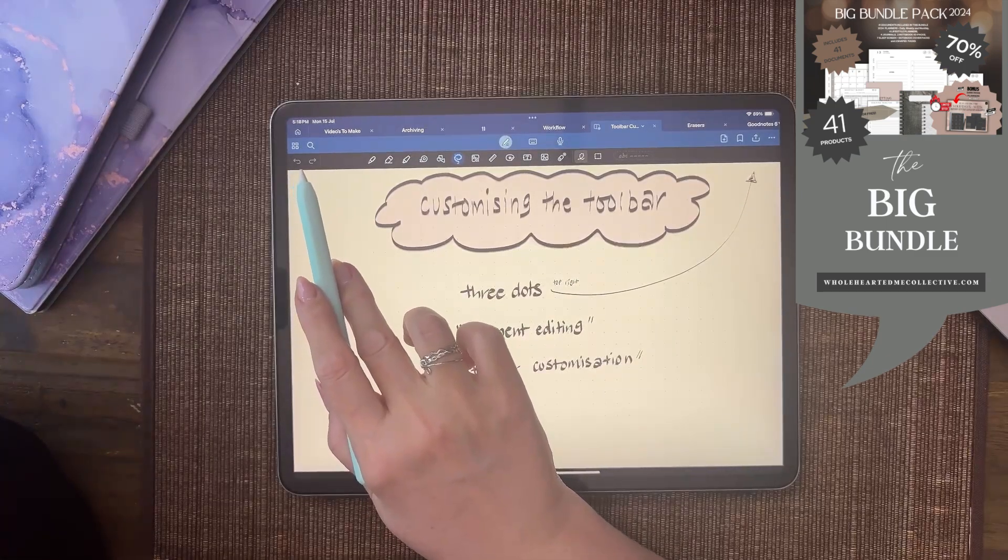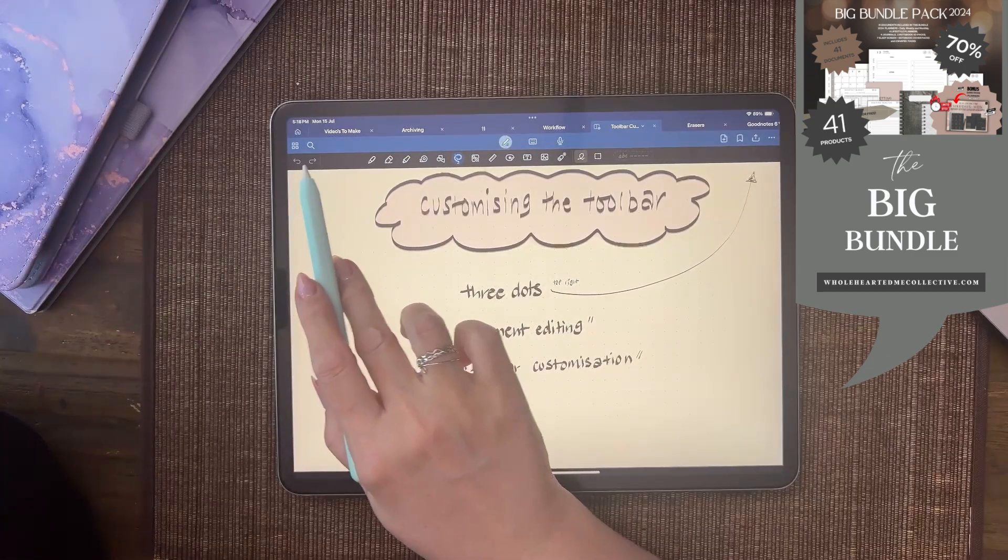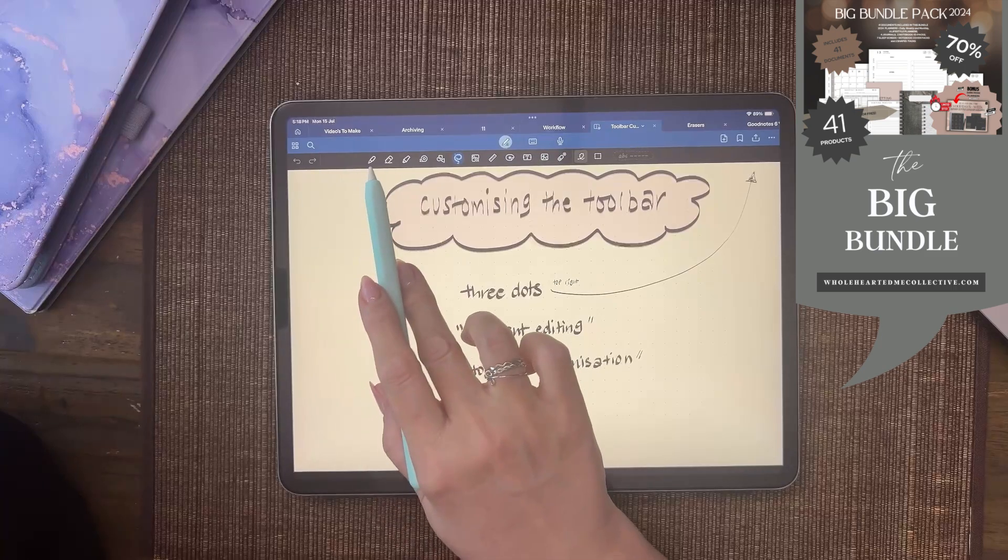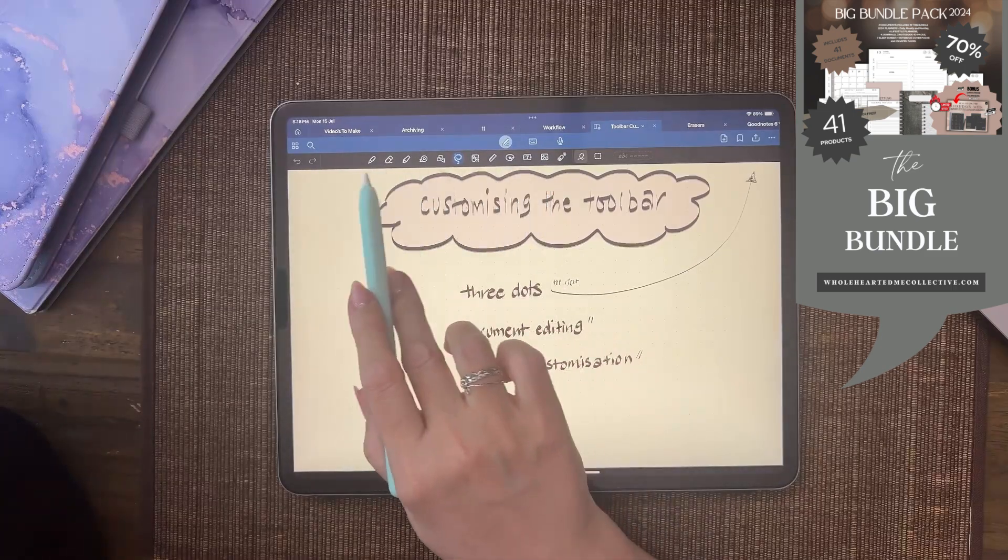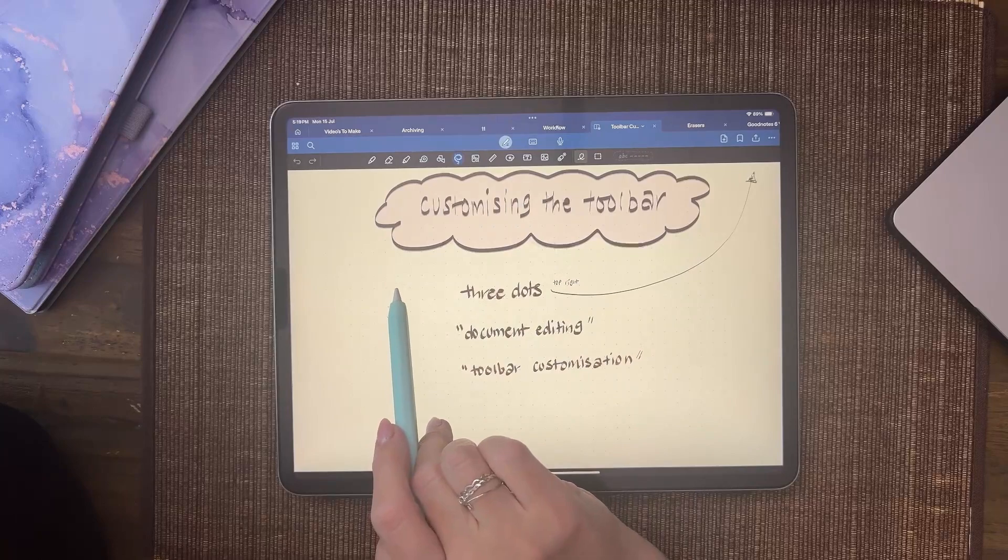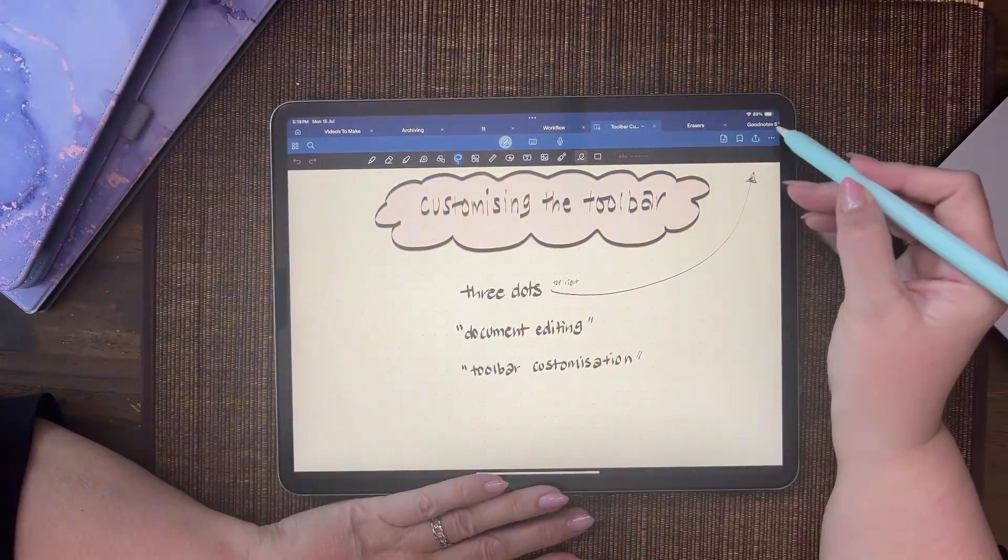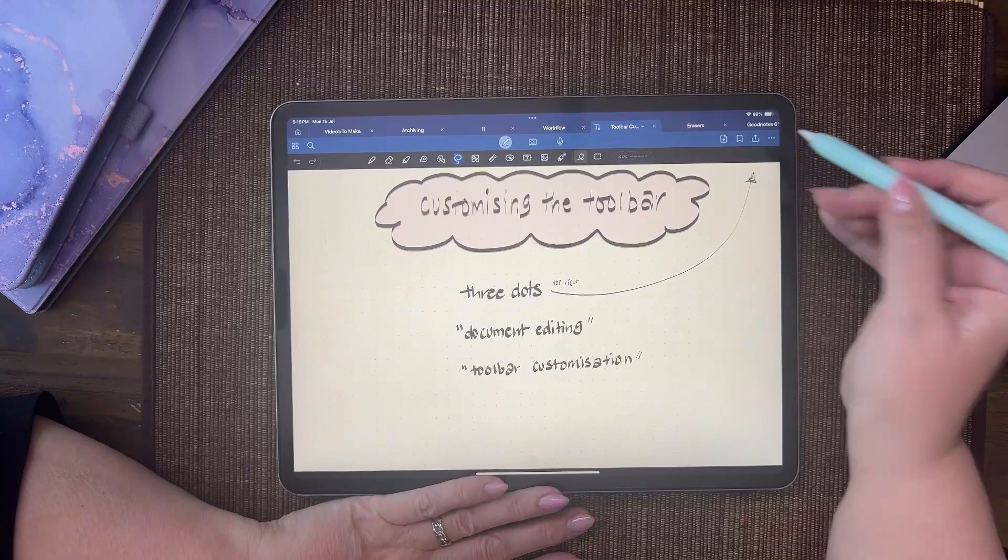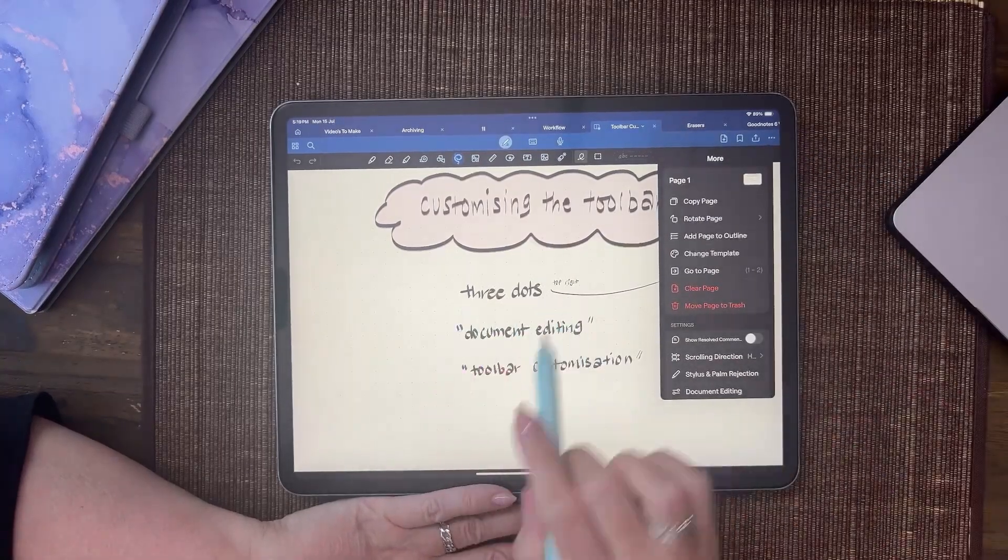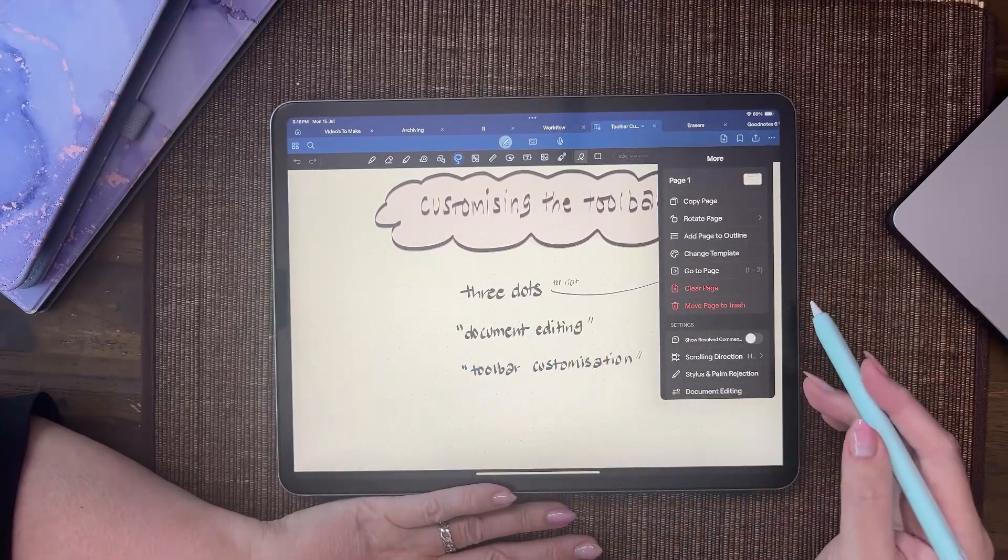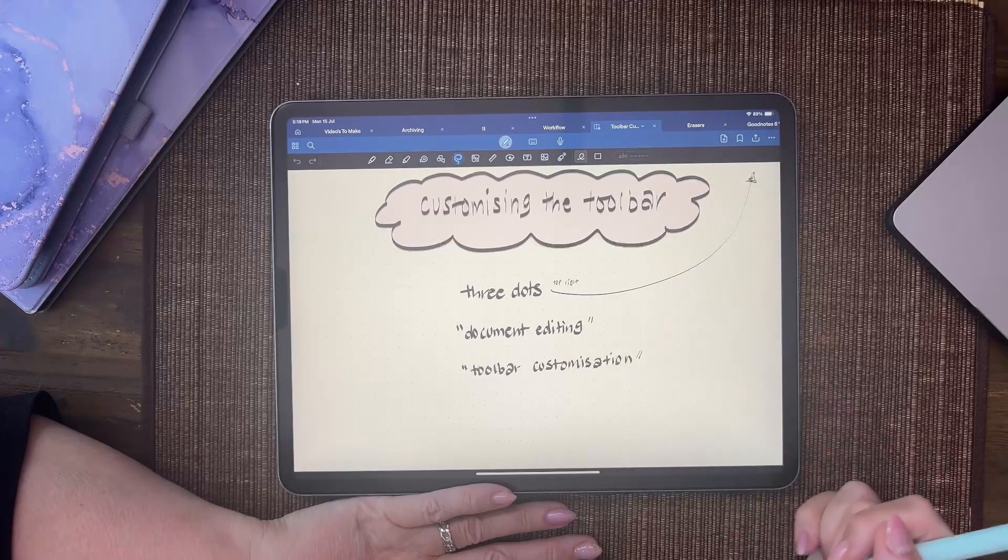This undo/redo area stays here, but you can change the order and even take some of these things away. I'll show you how to do that. These three dots at the top are really important. Click the three dots, then go into document editing, which is down at the bottom.